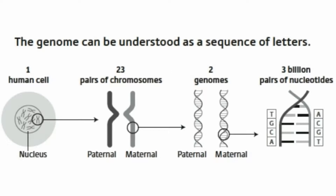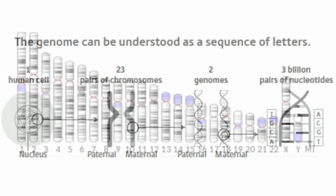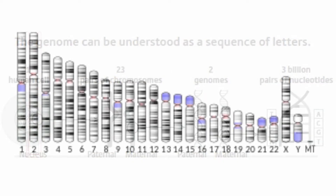The size of the chromosomes are not the same. The largest, number one, has more than 200 million base pairs. The smallest, chromosome 21, has only 46 million base pairs.